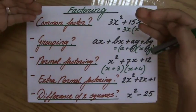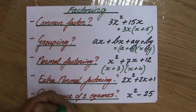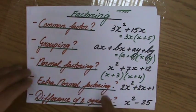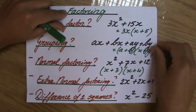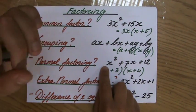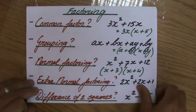Is there a common factor? Can I factorize it by grouping? Or is it normal factoring? And normal factoring, I call it normal because it's the one that occurs most frequently. You have three terms, and the coefficient of your x squared is a 1.